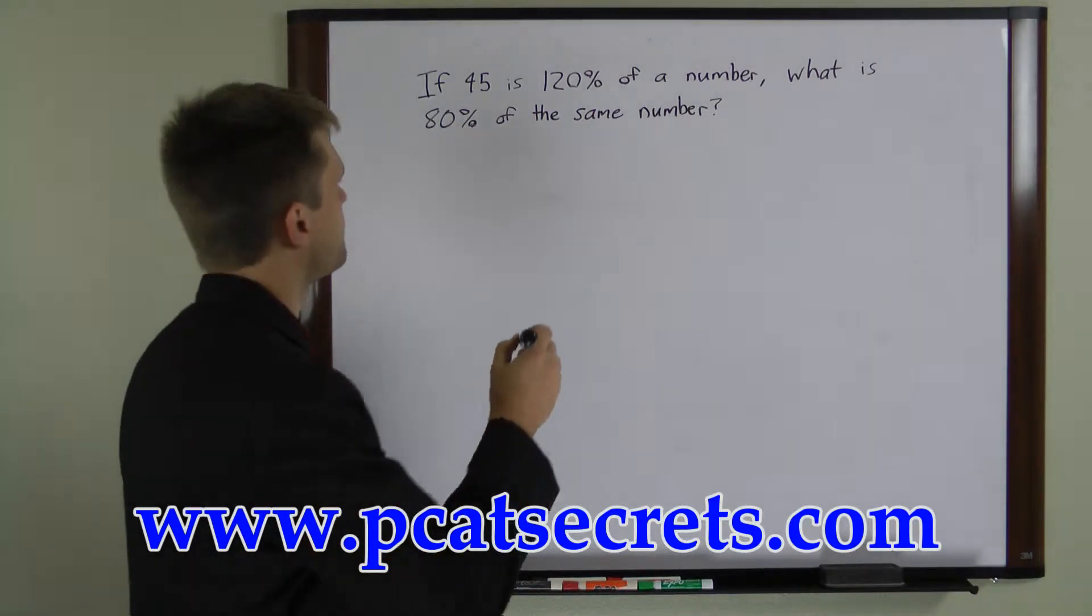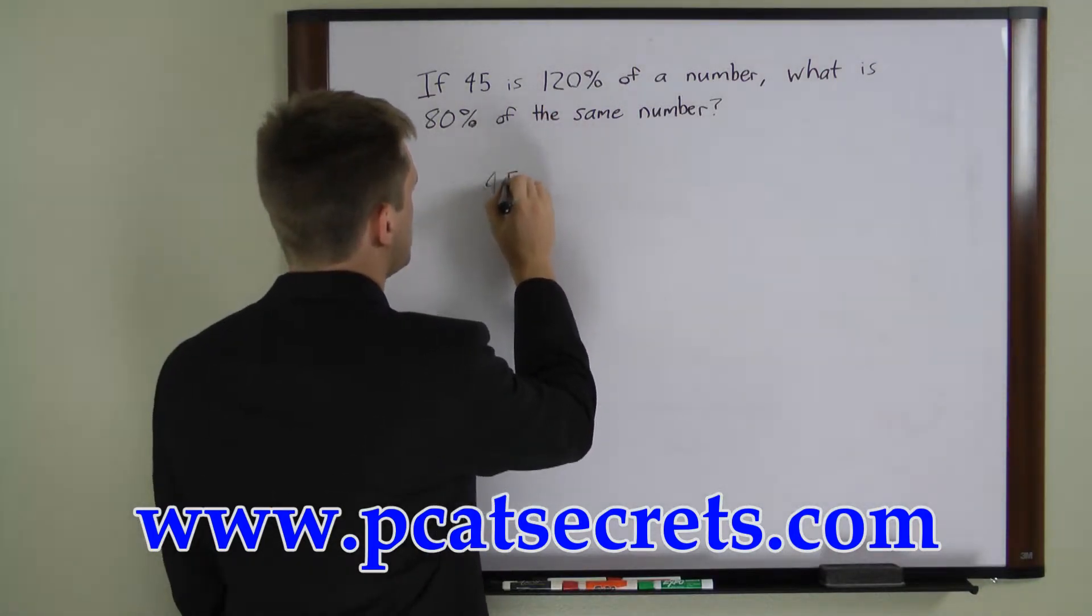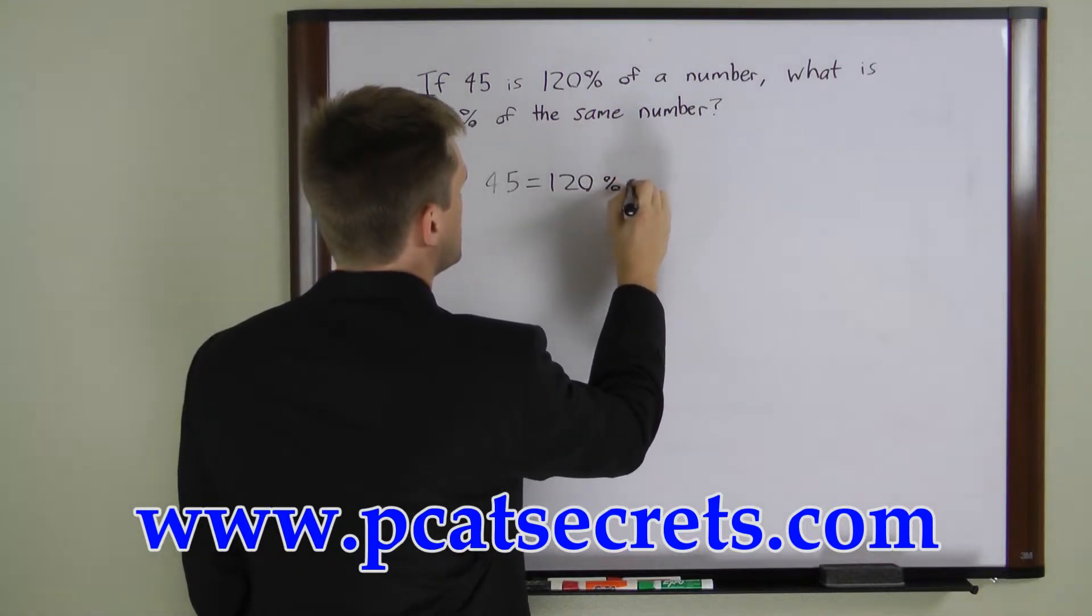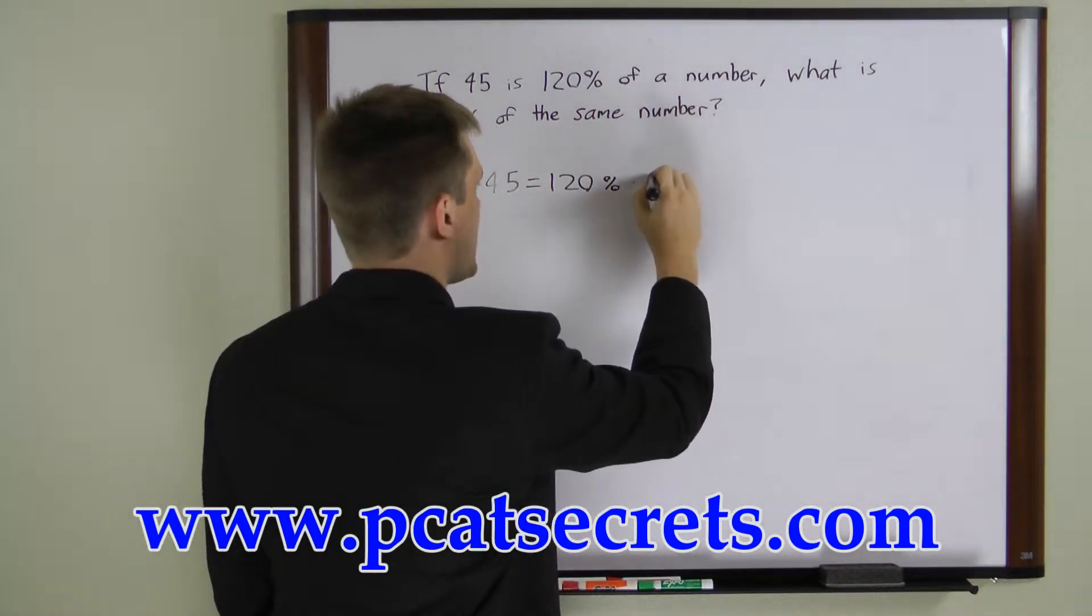Let's write the first one. First we have 45 equals 120% times a number. We'll call that number x.